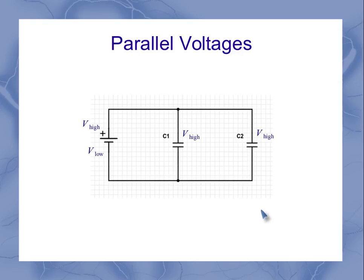The low side of the battery creates a low potential on both capacitors. This is the same low potential on the bottoms of all the capacitors and the same high potential on the tops.